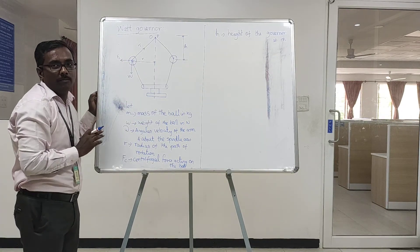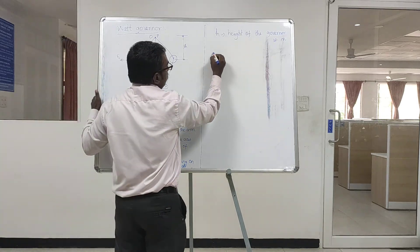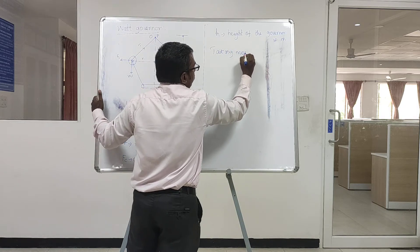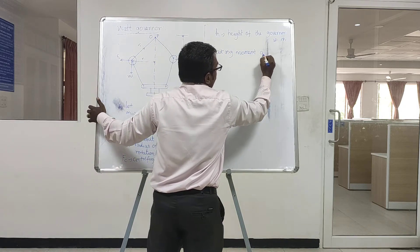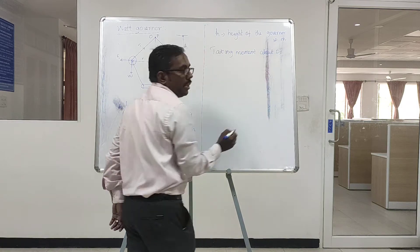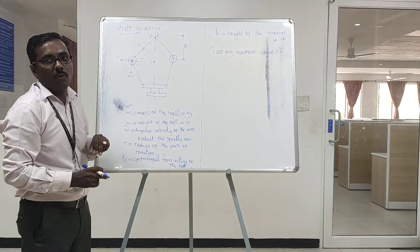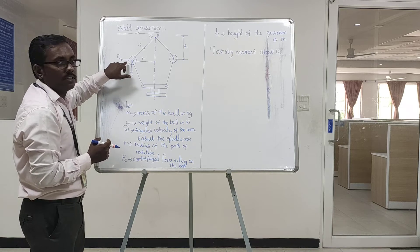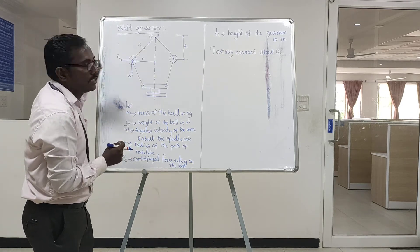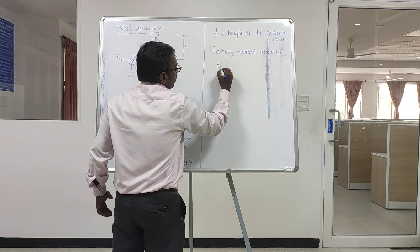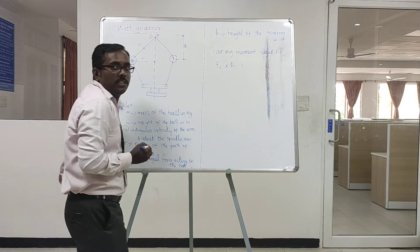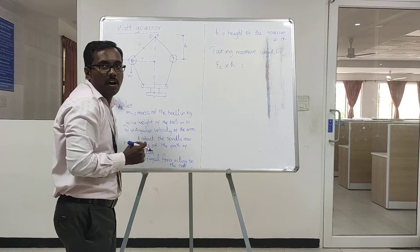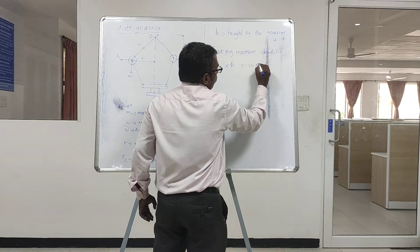the ball is in centrifugal equilibrium condition. Now, taking moment about that point O — moment means force into perpendicular distance. Here two forces are acting: one is Fc. So Fc into the perpendicular distance X, which is equal to W, the weight of the ball, into the perpendicular distance R. So W into R.